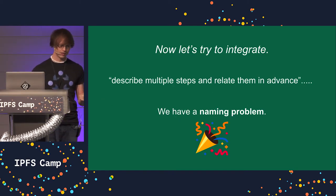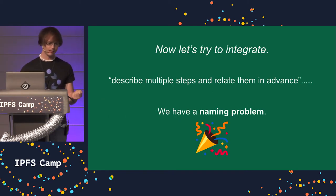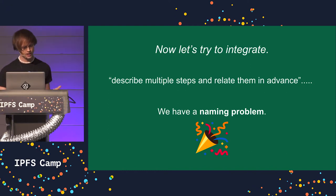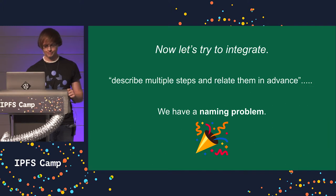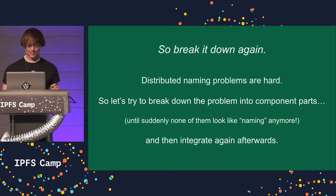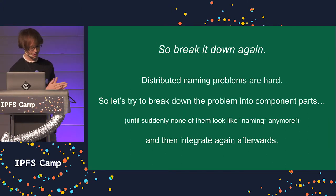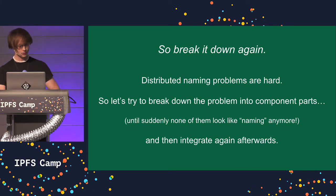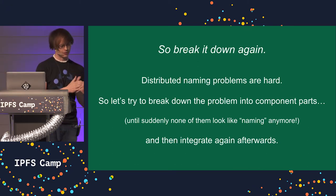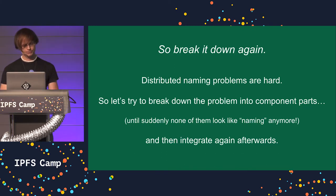Describing multiple steps and relating them in advance means we can't use hashes — we don't have a thing to hash yet. So we have a naming problem. Distributed naming problems are hard; I think everybody in the room knows that. So we tried to integrate a little bit and we got to a naming problem — let's try to break it down again, and maybe if we break the problem down enough, it will get easier.